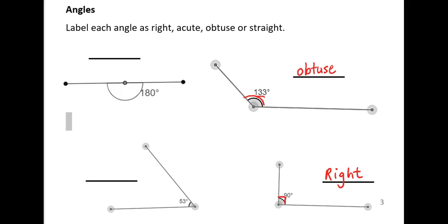Next to it, we have a straight angle. It looks like a straight line, and its measurement is 180 degrees. So we'll call that a straight angle.